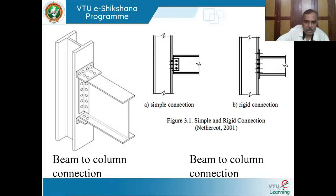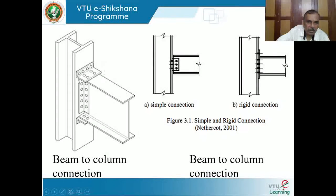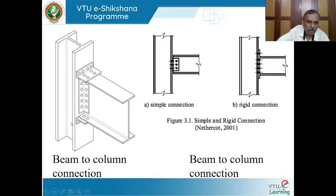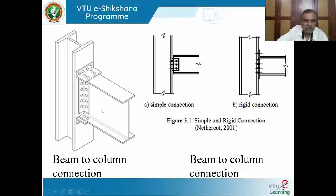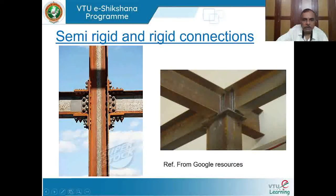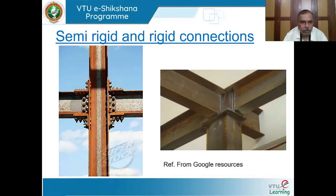Additional connection examples include clip angles at top and bottom, which can also serve as seated angles to assist in erection — the beam is hoisted by crane, rested on the angle, and the remaining connection is completed. Photographs show many bolts used to form beam-to-column connections.